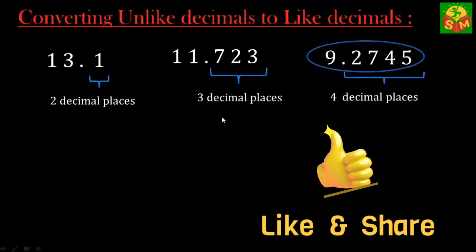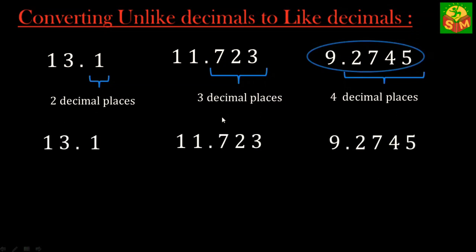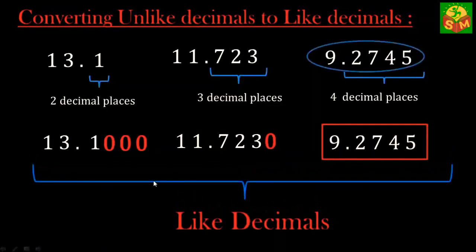So we convert each of the other decimals into one having four decimal places. Now 13.1 can be written as 13.1000, and 11.723 can be written as 11.7230, and this number is already having four decimal places. After converting we get 13.1000, 11.7230, and 9.2745 - these are now a set of like decimals. That's how we convert unlike decimals to like decimals.